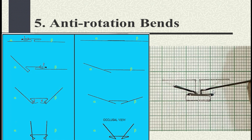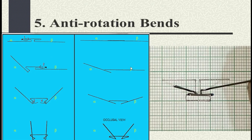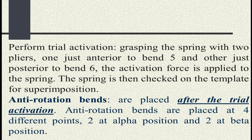How much anti-rotation bend is given? This is not provided in standard books like Nanda, Marcotte, the biomechanics book, Profit, or Op Karbanda. You have to search through many articles and reviews of T-loops to find the answer. The answer is: bends one and two are given in the loop itself at 25°, and bends three and four are also 25° given in the loop. One more question arises — how to measure these bends. Those who know the technique, please comment below.